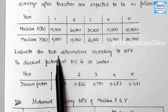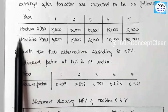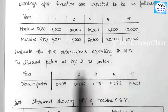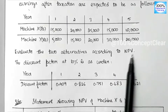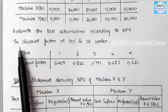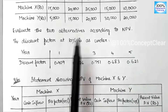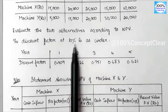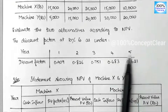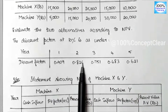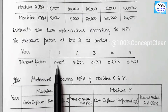The next question asks us to evaluate the two alternatives according to NPV method. We have to evaluate both machines using NPV. The discount factor at 10% is given. We have 10% rate for 5 years, with different discount factors each year.